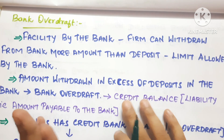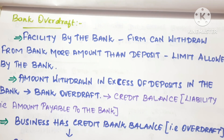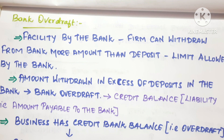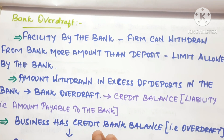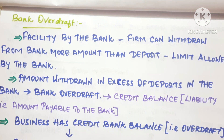This withdrawal is within the limit allowed by the bank - this facility is given to business people. If you have to pay a supplier, you can make payments through the bank. If you have an account with 6-7 lakhs and there is a difference of 2 lakhs, there is still a balance. There is trust in their business, and this causes a bank overdraft.